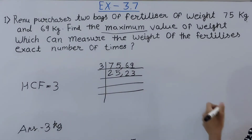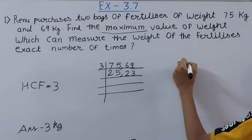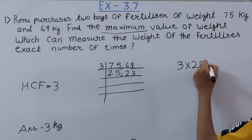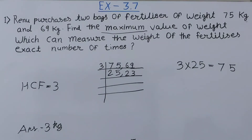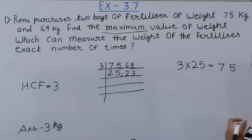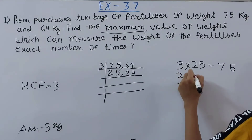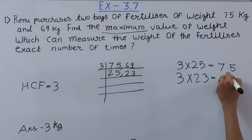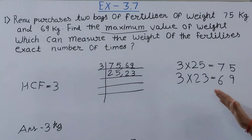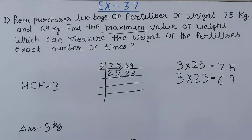Let me prove this. Multiply 3 by 25: 3 × 25 = 75. So if you take 3 kg 25 times, it measures 75 kg exactly. Now for 69: multiply 3 by 23, and 3 × 23 = 69. So 3 kg taken 23 times measures 69 kg exactly. This confirms that 3 kg measures both weights an exact number of times.